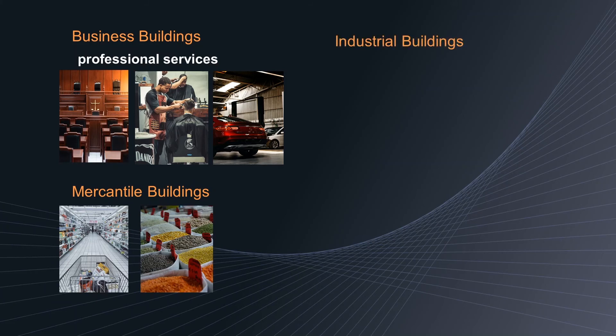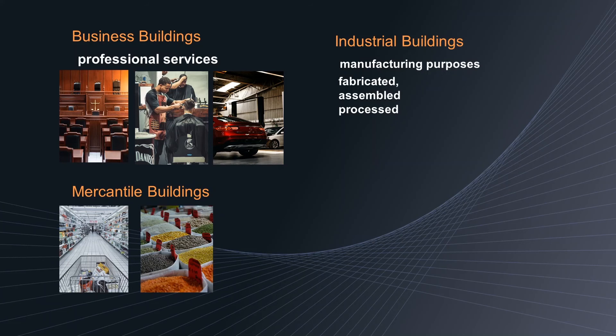Seventh, industrial buildings. This type of building is mainly used for manufacturing purposes. Here, products or materials of all kinds and properties are fabricated, assembled, or processed. Most manufacturing industries can be taken as examples.